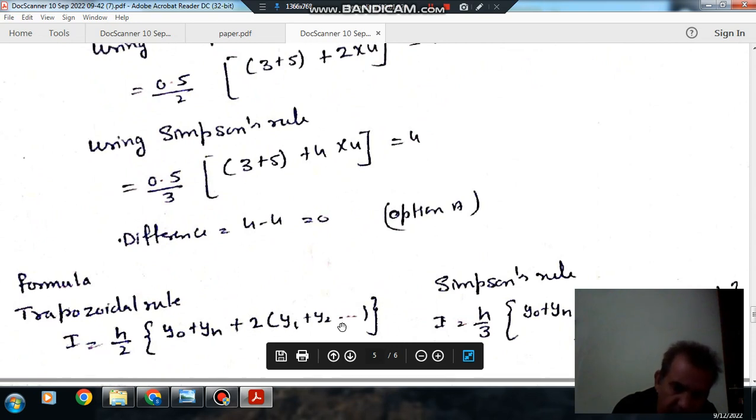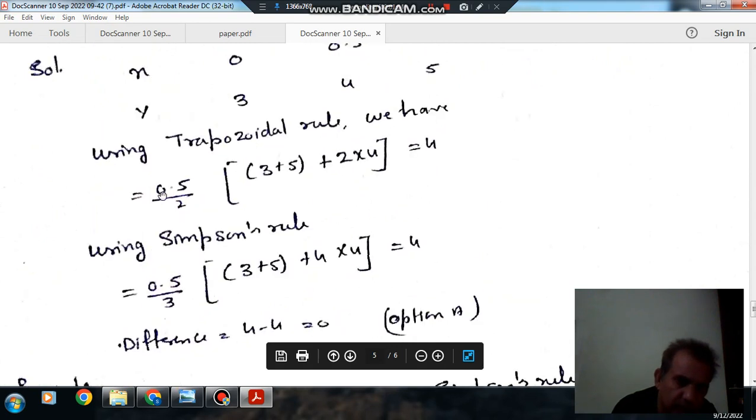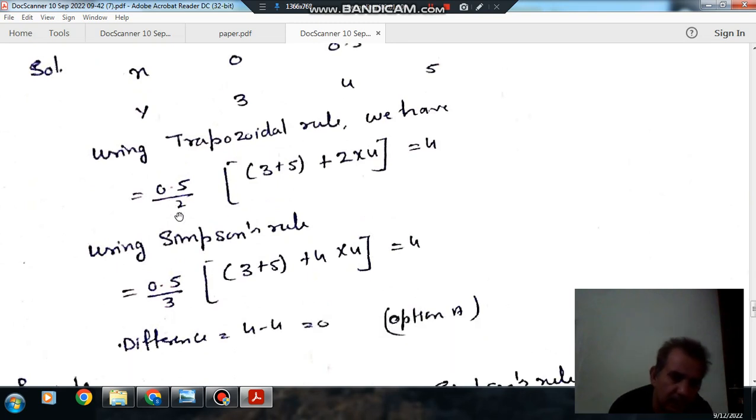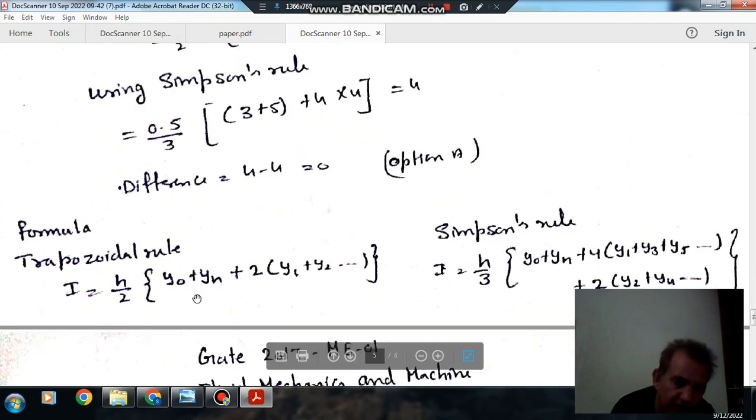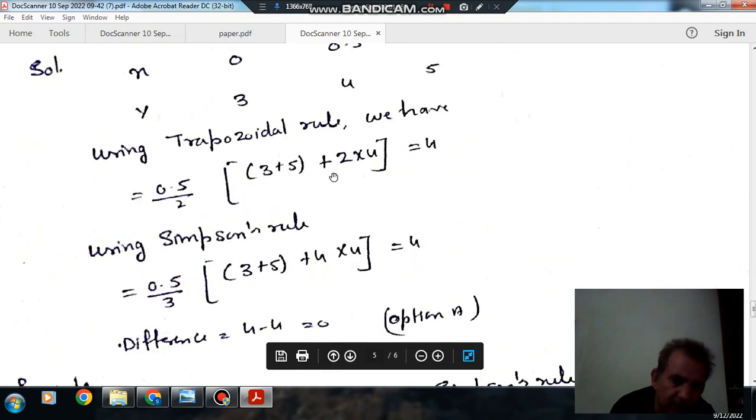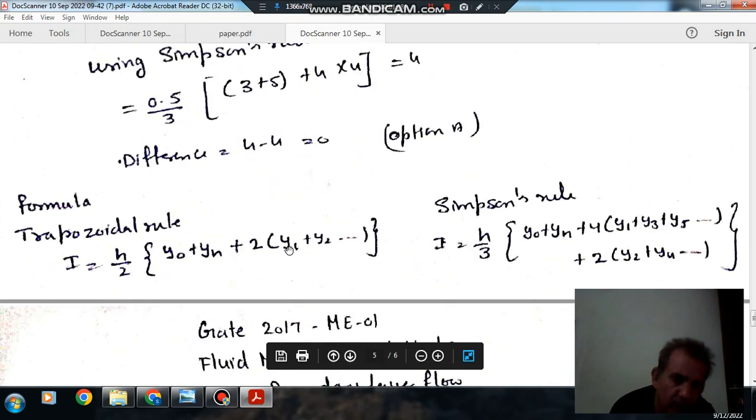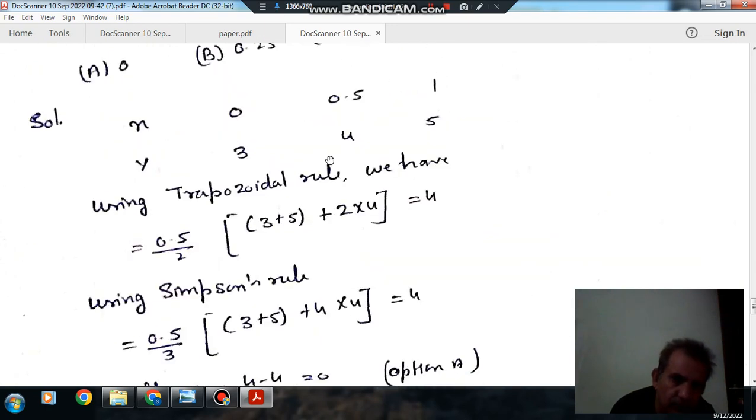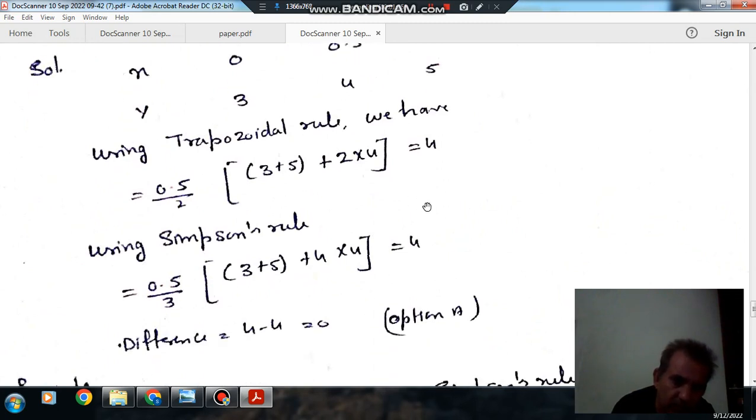Using the trapezoidal rule, step size h is 0.5, so it's 0.5/2 times [first and last are 3 and 5, so y₀ and yₙ are 3 and 5] multiplied by 4. The intermediate value is 4, and 2 times 4 comes out as 4. So using the trapezoidal rule, the integration comes out as 4.